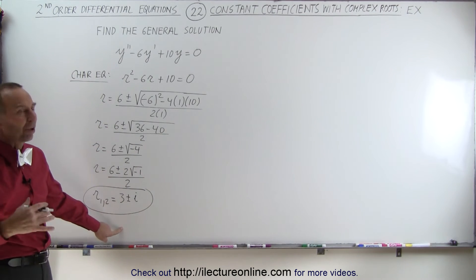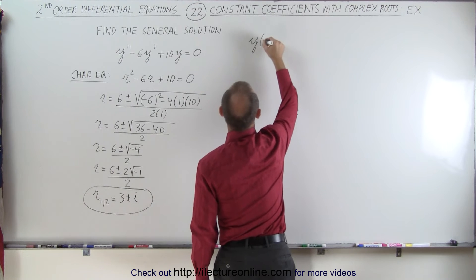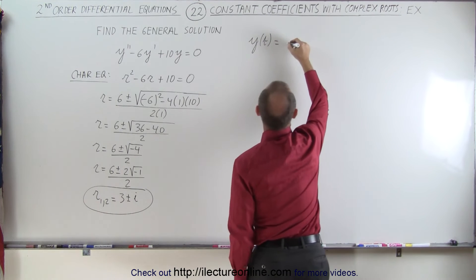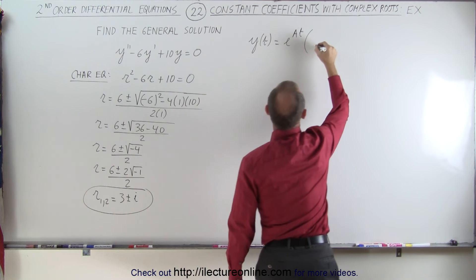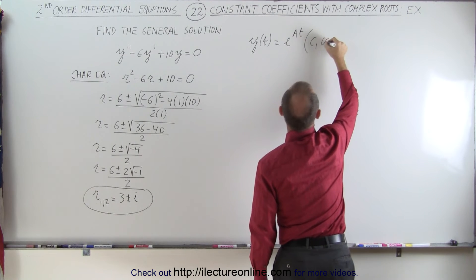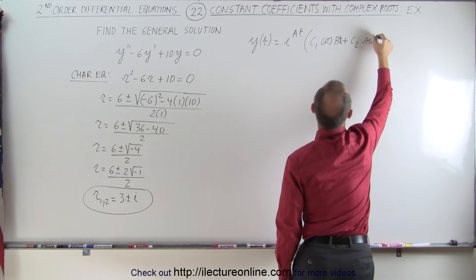And now we'll use those into our general equation. Our general equation looks as follows. Y is a function of time is equal to E to the AT times C1 cosine of B plus C2 sine of B.